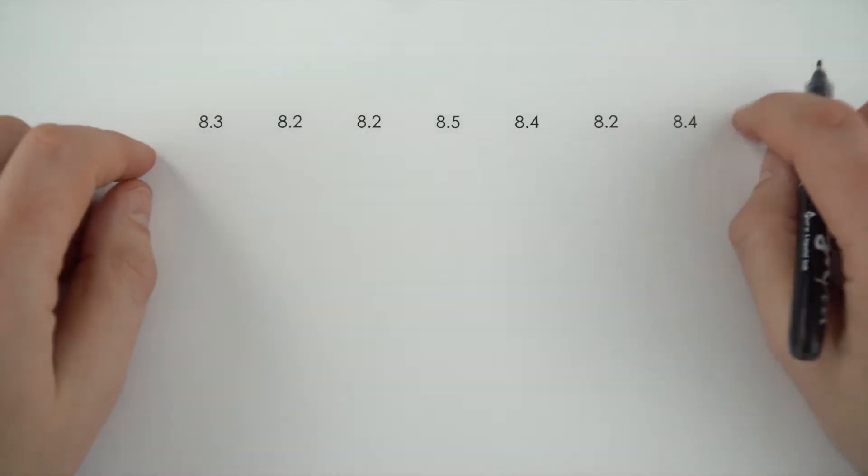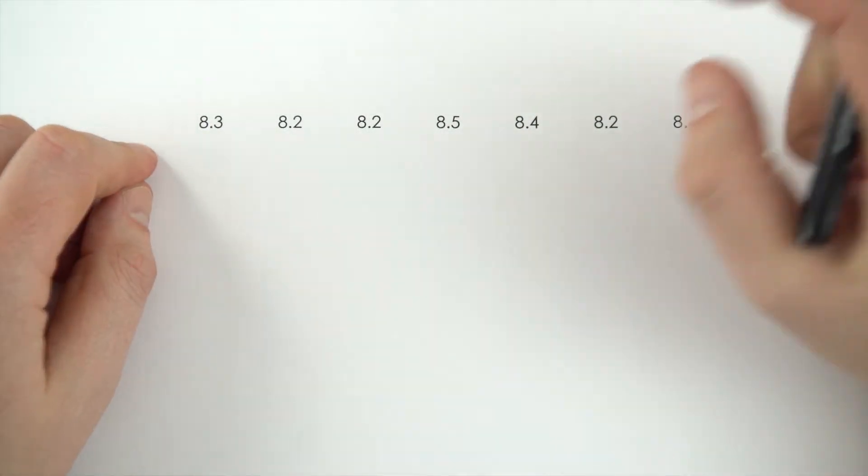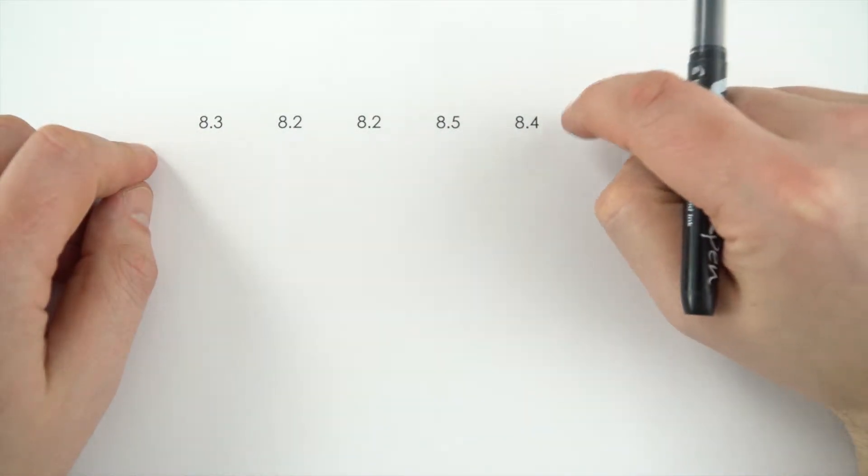Now, when you're doing experiments in science, you often take repeated readings, and afterwards you then take an average of your results.